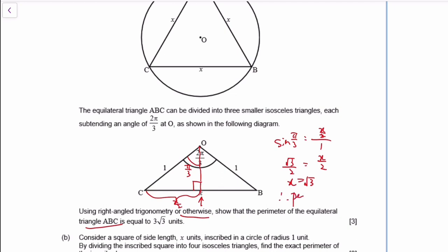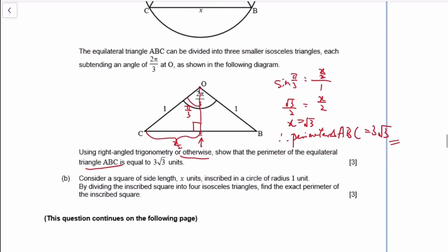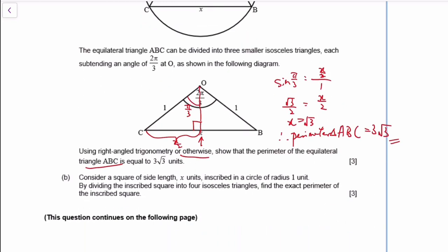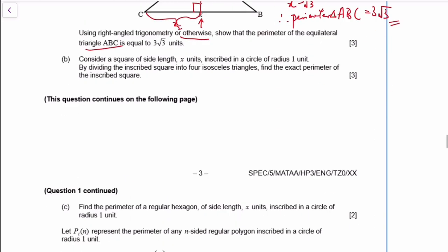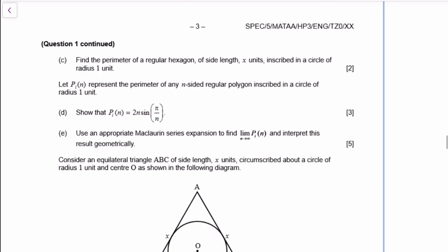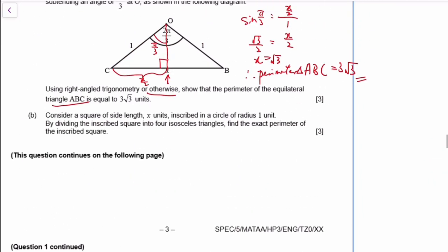Therefore the perimeter of the whole equilateral triangle would be 3 times that. Then consider a square inscribed in a circle of radius 1, dividing it into 4 — find the perimeter of the square.